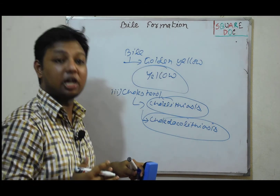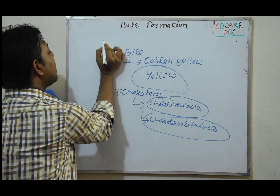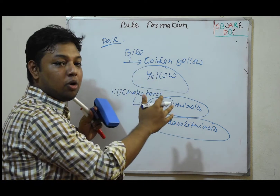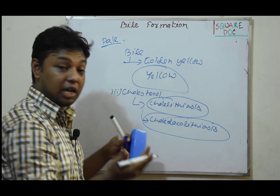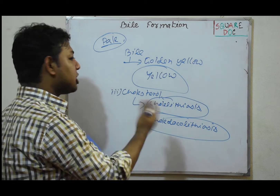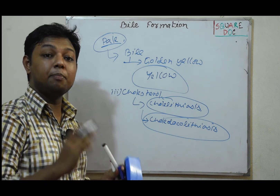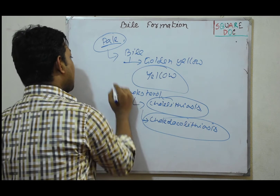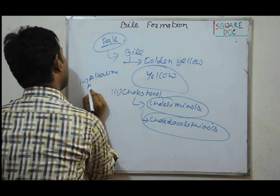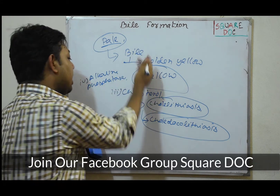When the bile duct is obstructed by stones, this condition is called obstructive jaundice. If bile does not reach the second part of the duodenum, the fecal matter becomes pale in color. The skin color becomes yellow (jaundice). Pale stools are an important diagnostic feature of obstructive jaundice. Alkaline phosphatase — produced by biliary epithelial cells — is also elevated in this condition.